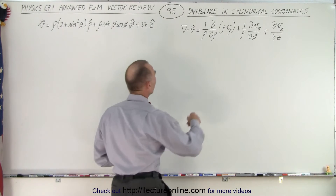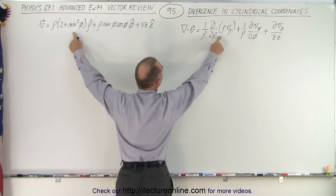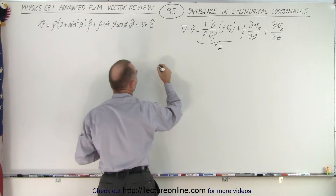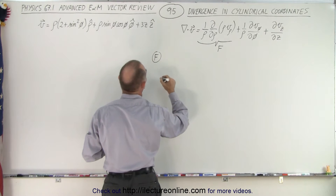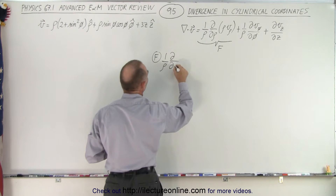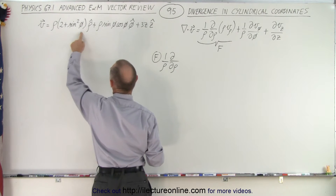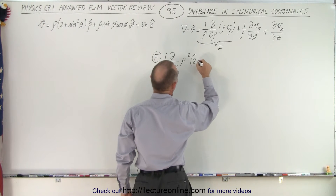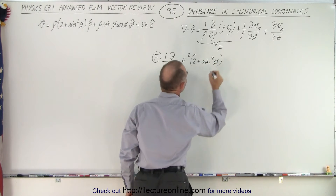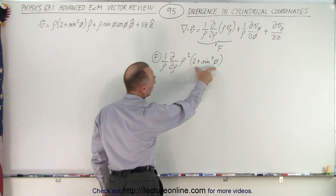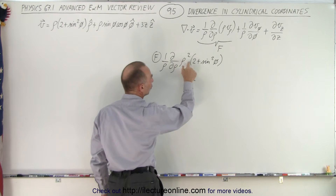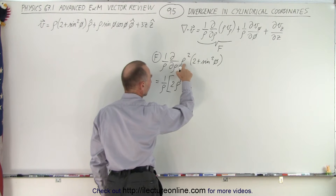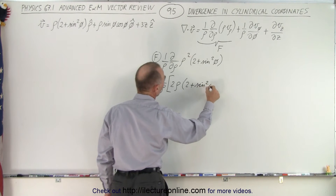Let's do the first term. We're going to multiply the rho component by rho, and then take the partial derivative. So we have 1 over rho times the partial derivative with respect to rho of rho times this. So we take rho squared times 2 plus sine squared of phi — times 2 plus sine squared of phi. Notice we now take the partial derivative with respect to rho, so this whole thing becomes a constant.